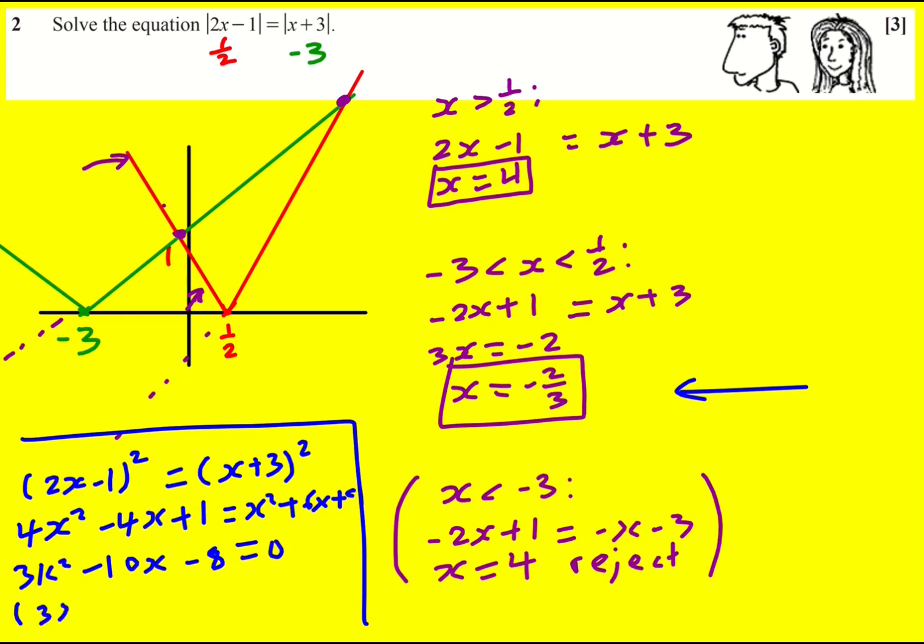We can factorize this quadratic: (3x+2)(x-4) = 0, giving x = -2/3 or x = 4. Be sure to check back to verify these aren't spurious. We get |7| = |7| for both cases, though the -2/3 case is slightly more awkward, but it checks out as well.